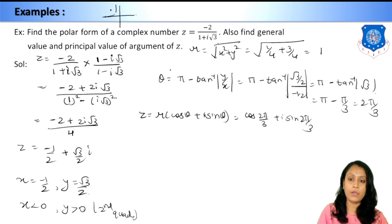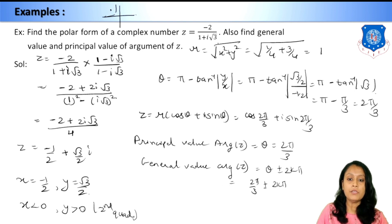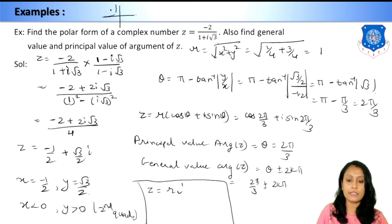The principal value of argument of z, Arg(z) = θ = 2π/3. The general value of argument, arg(z) = 2π/3 ± 2kπ. If the exponential form is asked, z = re^(iθ) = 1·e^(i·2π/3) = e^(i2π/3).